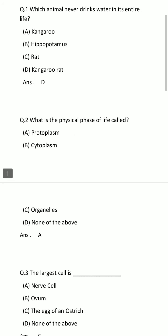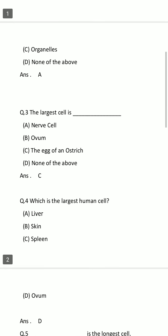Question number 2: What is the physical phase of life called? Option A: Protoplasm. Option B: Cytoplasm. Option C: Organelles. Option D: None of these. Your time starts now. The time is over and the answer is Option A: Protoplasm.